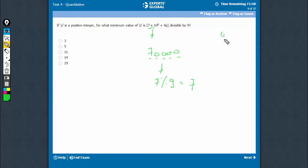Coming to 4p, 4p will give me remainder 4 when p equals 1, it will give me remainder 8 when p equals 2, it will give me remainder 12, 16, 20, 24, 28, 32, 36 respectively.